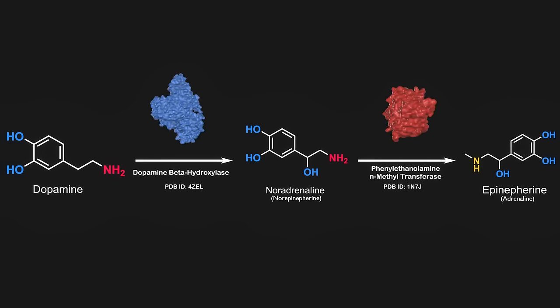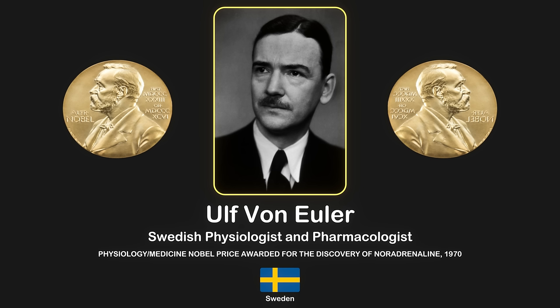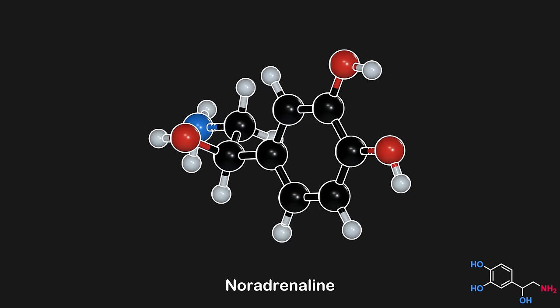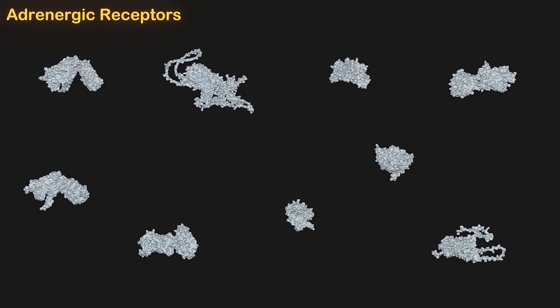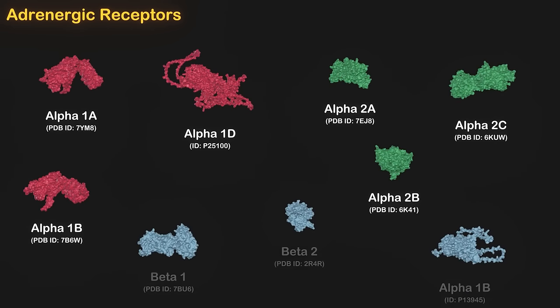Our understanding of noradrenaline owes much to the groundbreaking work of Ulf von Euler, a Swedish scientist. He identified and named noradrenaline in the 1940s, a contribution that won him a share of the Nobel Prize in physiology or medicine, in 1970. Noradrenaline operates by interacting with several types of receptors, specifically termed adrenergic receptors. These receptors primarily fall into two categories, alpha-adrenergic and beta-adrenergic.